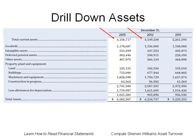Total current assets really didn't increase by much, only by about $9,000,000 from 2012 to 2013. However, property, plant, and equipment did increase by $60,000,000, and that accounts for the most significant reason that assets increased. Let's find out why plant and equipment increased.